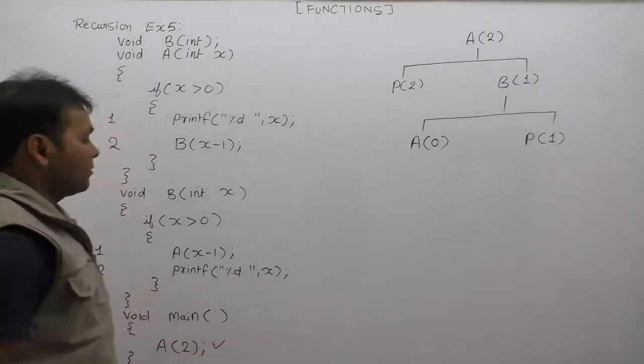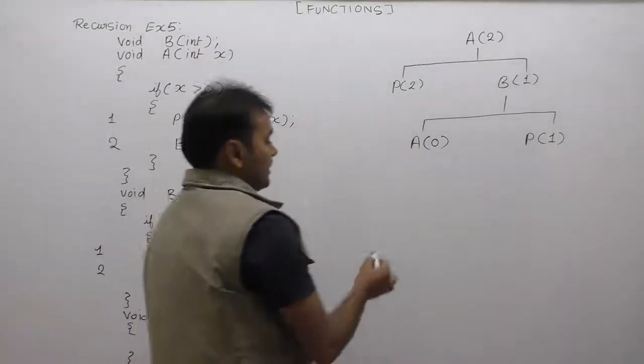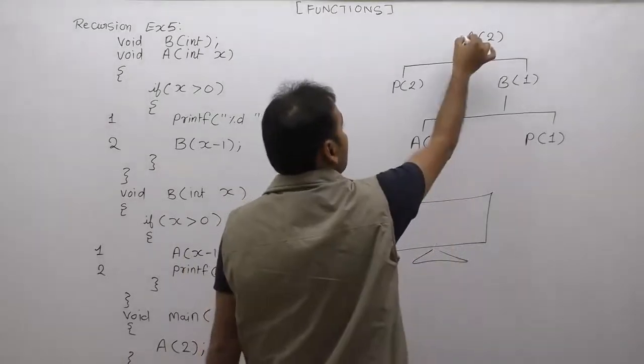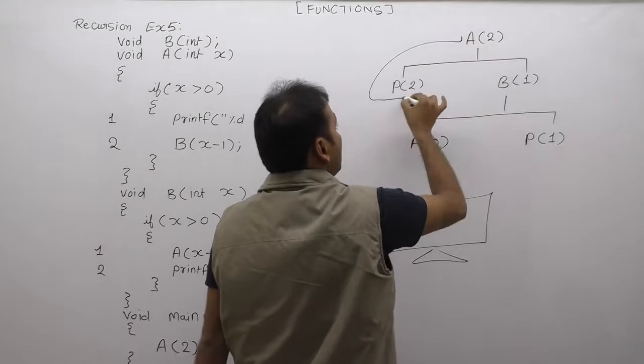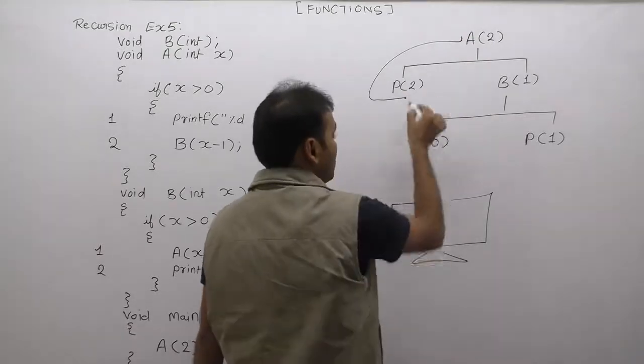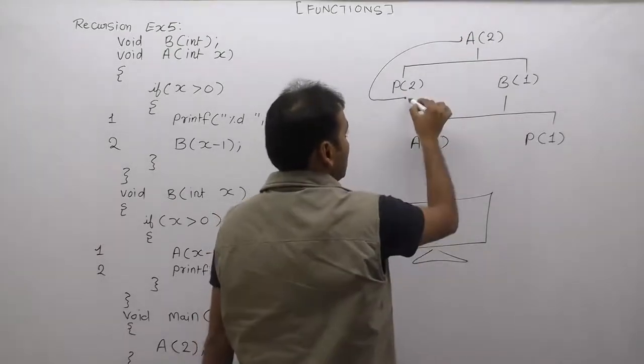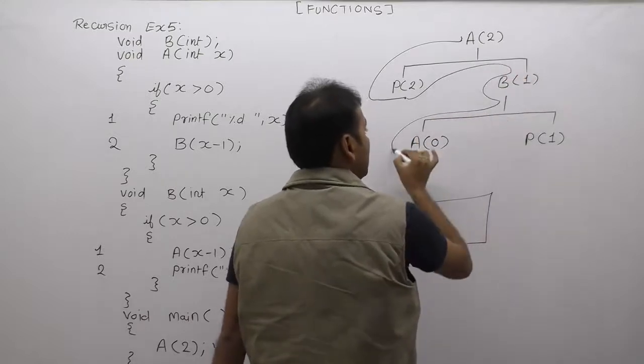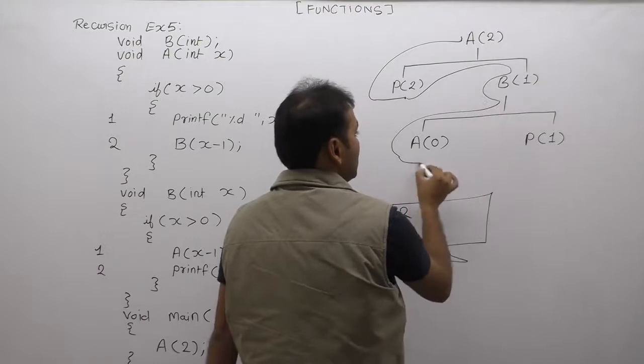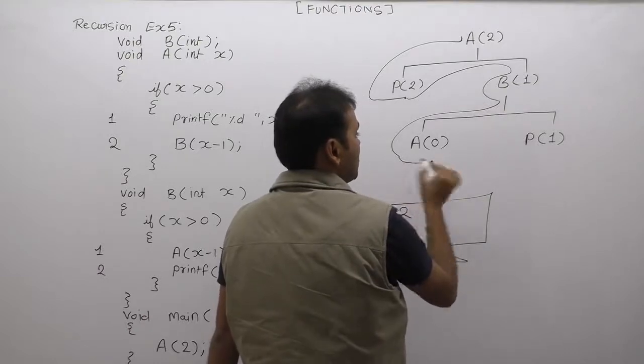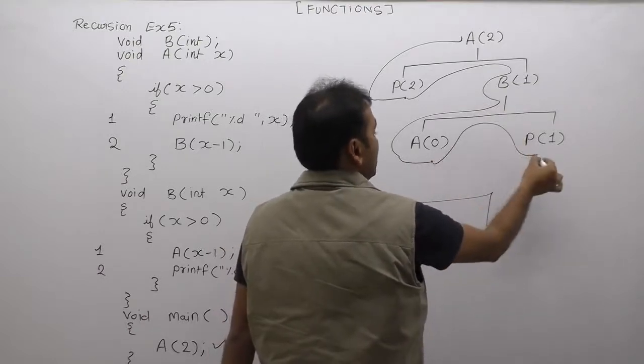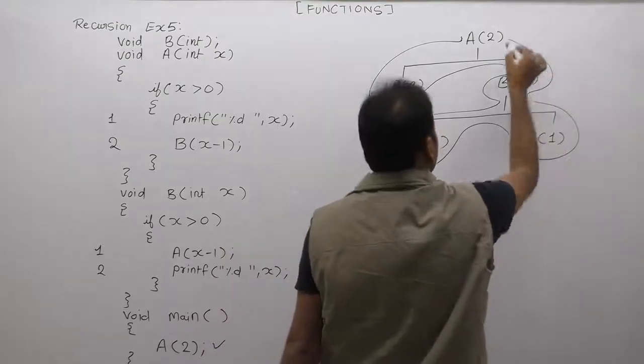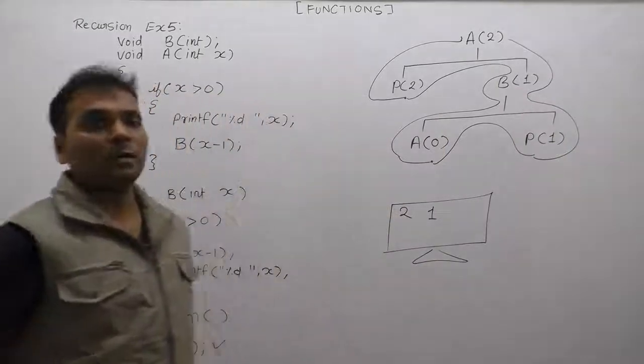Then in this case, directly we solve the output. In that case, simply printf value is 2. Then function B, nothing to process. Function A, nothing to process. Then printf 1. Again, finally the output in this case is 2 and 1.